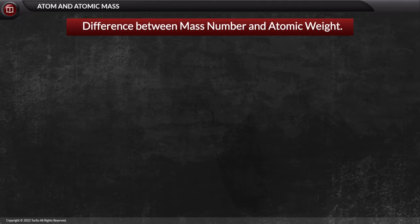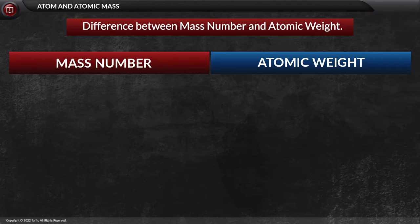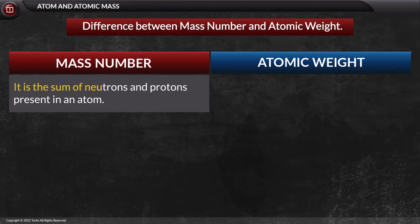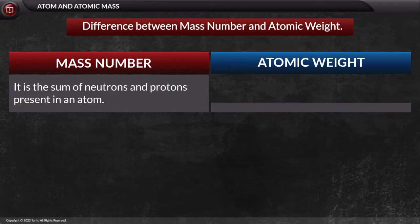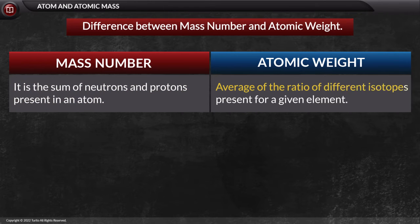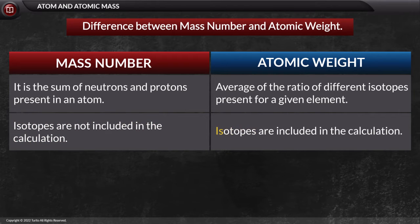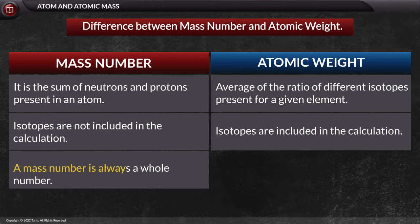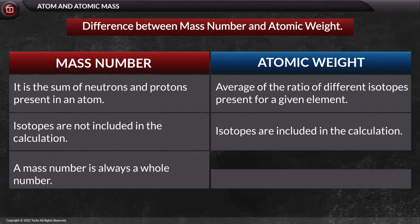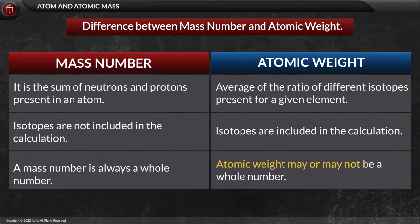An often asked question is how mass number and atomic weight differ from each other. The mass number is the sum of neutrons and protons in an atom, while atomic weight is the average of the ratio of different isotopes for a given element. Mass number does not include isotopes in the calculations, while for atomic weight all isotopes are included. Mass number is always a whole number, but the same is not true for atomic weight.